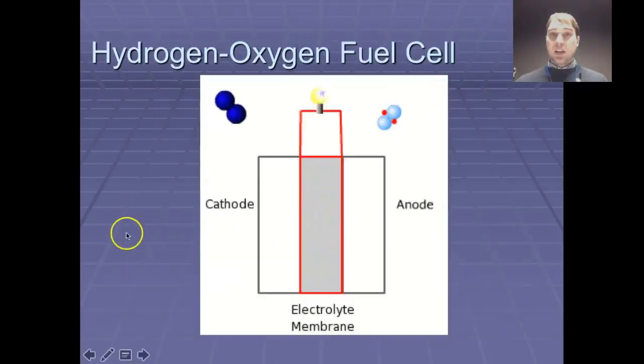Here's an animation showing how a hydrogen-oxygen fuel cell works. Hydrogen coming in from this side, this is the anode. Electrons are being stripped off of the hydrogen. The hydrogen ions pass through and we get our water being produced on this side at the cathode.